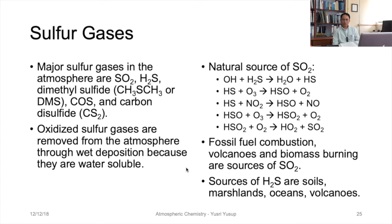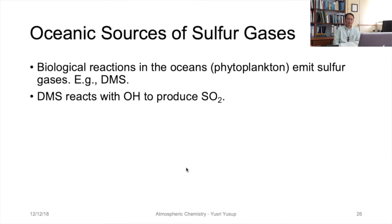Fossil fuel combustion, volcanoes, and biomass burning are also sources of sulfur dioxide. Sources of H₂S — a precursor of SO₂ — include soils, marshlands, oceans (a large component), and volcanoes. The oceanic sources are very large sources of sulfur gases, released due to biological reactions — specifically phytoplankton activity — which emit sulfur gases such as dimethyl sulfide (DMS).